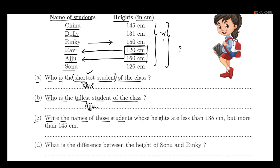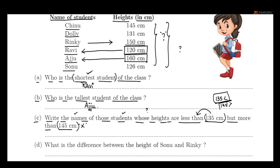Write the names of those students whose height is more than 135 centimeters but less than 150 centimeters. So we need heights that are less than 150 cm but more than 135 cm.